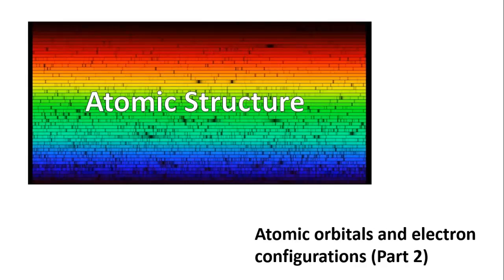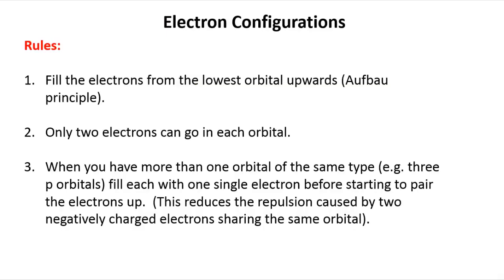In part two of this lecture we'll learn how to write electron configurations using Schrödinger's orbitals rather than Bohr's orbits. So with this complicated series of orbitals from Schrödinger's model how do we go about writing electron configurations? It's actually not hard at all. There are a few simple rules that you need to follow.